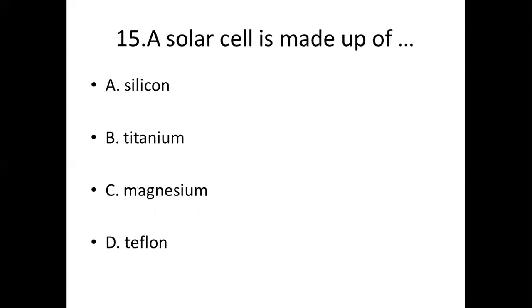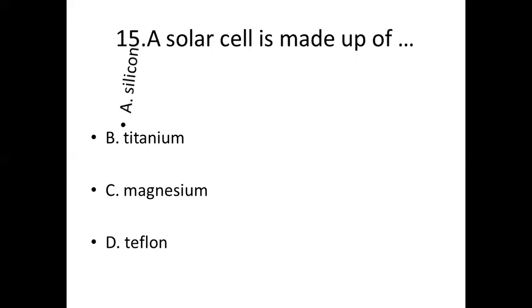Fifteenth bit. A solar cell is made up of: Option A, silicon. Option B, titanium. Option C, magnesium. Option D, teflon. Answer: Option A, silicon.